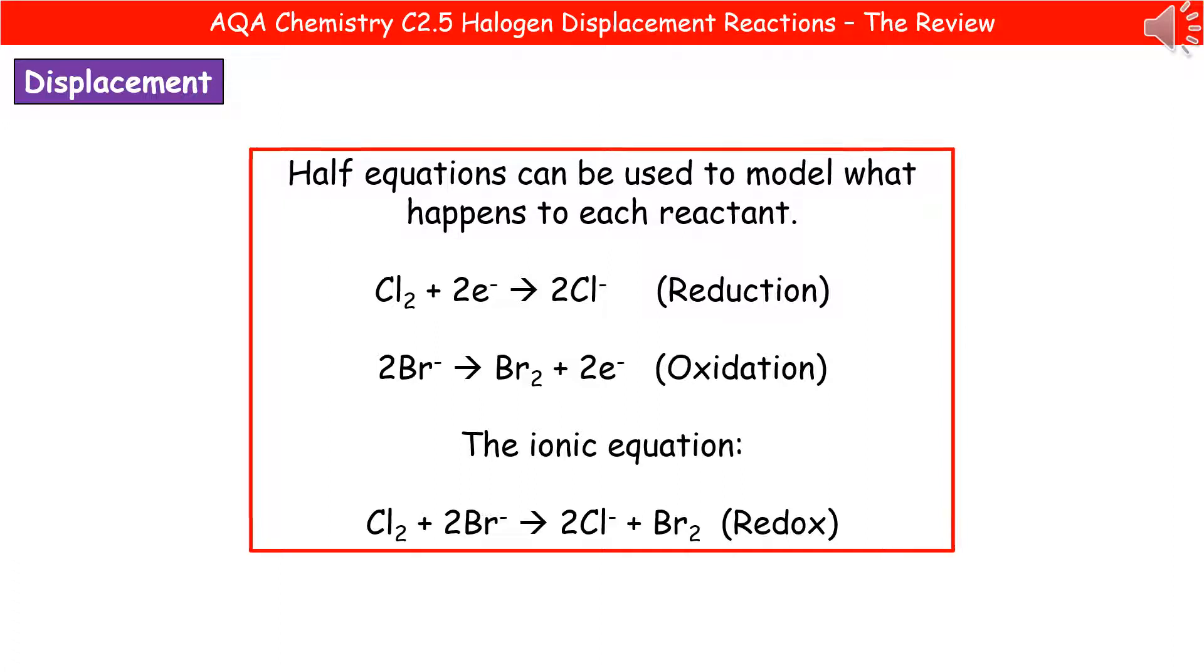If we consider what happens to our bromine, it starts off in its salt, so therefore it's starting off as bromide ions, and there'll be two of them. And they're going to join together to make bromine as a molecule, Br2, and those two electrons are going to be released. So you get Br2 plus 2e-. So because we're losing electrons, it's an oxidation reaction.